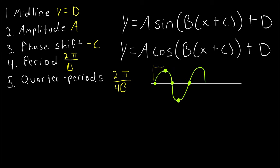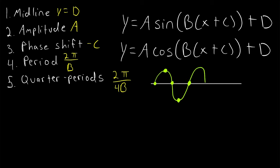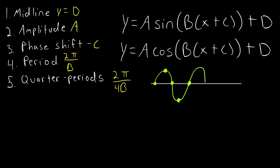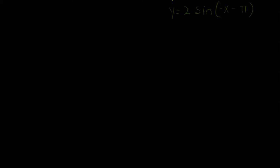Those quarter periods really help us label our x-axis. And the y-axis, we are able to label after we find the midline and amplitude. There are certainly some hidden steps in here that you've got to make sure you don't forget, so it's not a complete list of instructions. Let's see those fine details work out as we get into some examples.